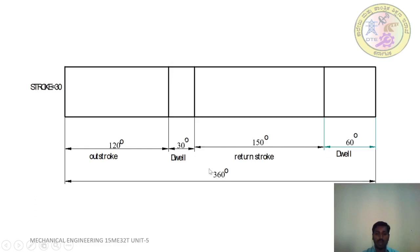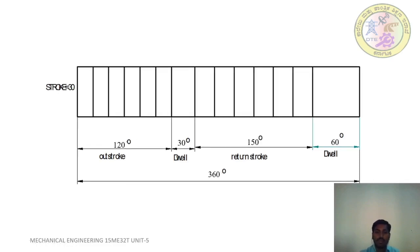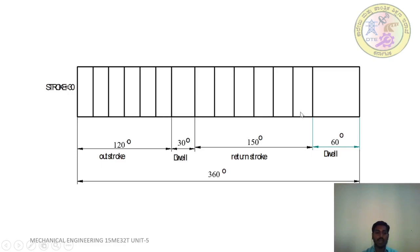Write the actual degree values: 360 degrees total, outstroke 120 degrees, dwell 30 degrees, return stroke 150 degrees, dwell 60 degrees. Divide the outstroke into 6 equal parts, drawing vertical lines through each point. Similarly, divide the return stroke into 6 equal parts.